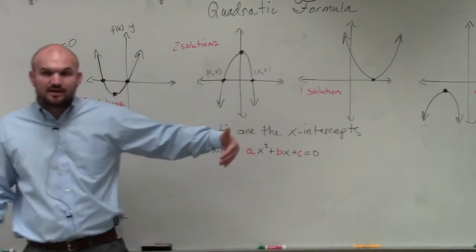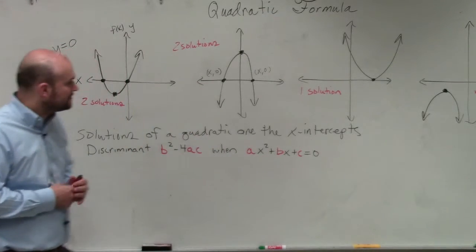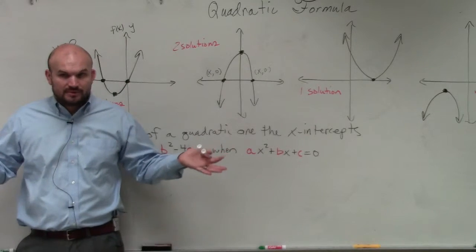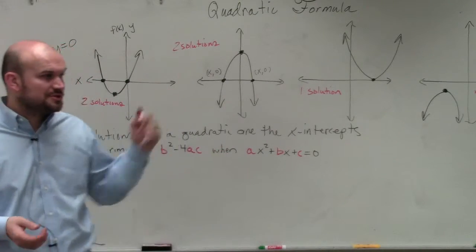And I'm going to change that up for you guys as well. So make sure you guys understand that. Now, when you do b squared minus 4 times a times c, you're going to get a number. And what that number is, is going to tell you what type of solutions you have.